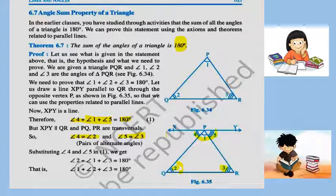See Theorem 6.7: The sum of angles of a triangle is 180 degrees. Let us take one triangle — triangle PQR. Name each angle of the triangle as angle 1, angle 2, and angle 3. Now here we have to prove that angle 1 plus angle 2 plus angle 3 equals 180 degrees.